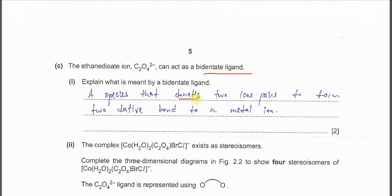A species that donates two lone pairs to form two dative bonds to the metal ion. Bidentate ligand means two. So it must donate two lone pairs to form two dative bonds.